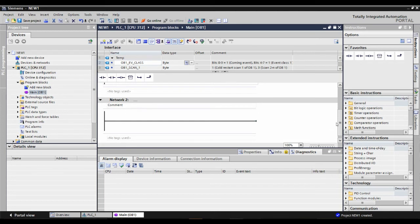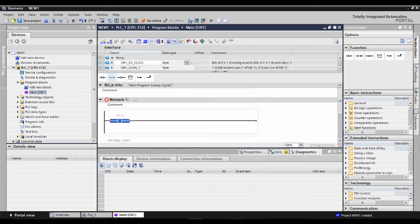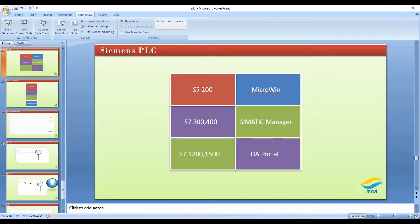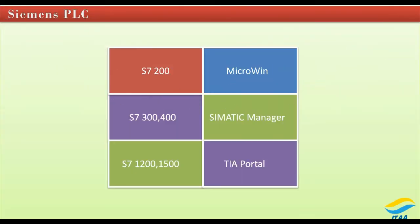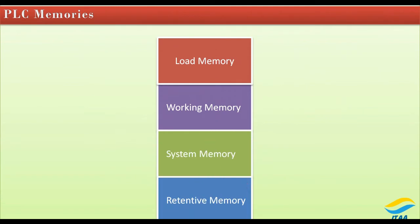I'll put it in here so you understand Normally Open. I've just clicked and the Normally Open contact is already there with address I 0.0. You might be wondering what I 0.0 means — let me teach you about that. We were talking about PLC memories, specifically system memory, and how addressing works in a PLC.